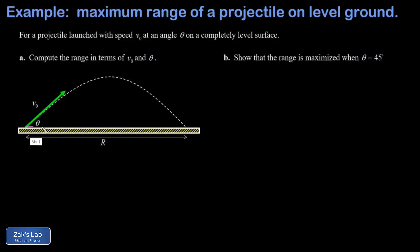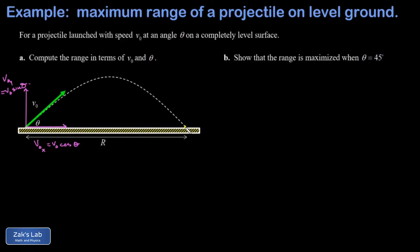We'll start by breaking the initial velocity vector into components. In the X direction I have V₀ₓ, which is V₀ cosine theta, and in the Y direction I have V₀ᵧ, which is V₀ sine theta. The first thing I do is go after the flight time.